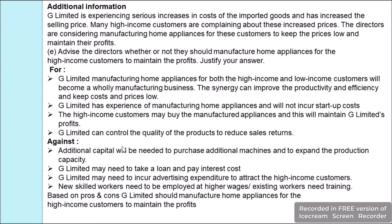However, increased production may require purchasing additional machinery, requiring additional capital or loans and increasing interest costs. More advertising may be needed to attract high income customers, and workers may require additional training, increasing production costs. Despite these drawbacks, the benefits outweigh them, so I recommend that G Limited should manufacture home appliances for high income customers to maintain their profit.